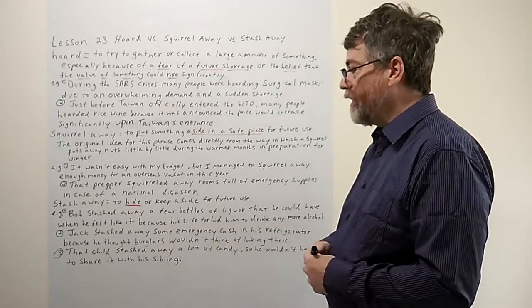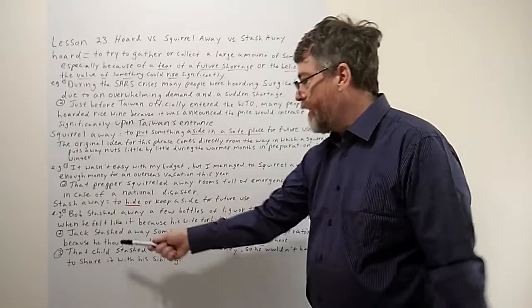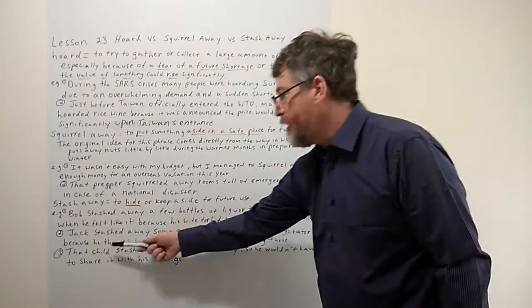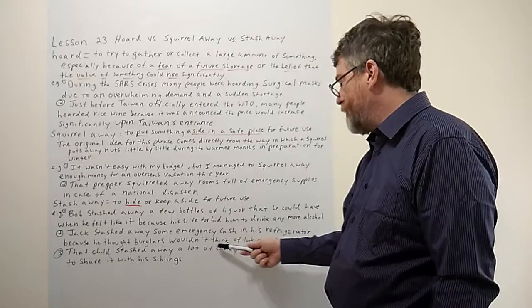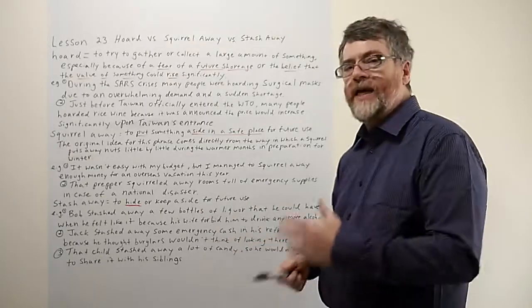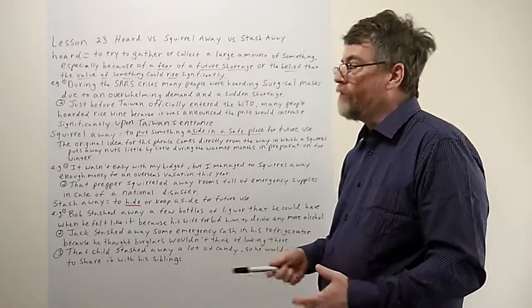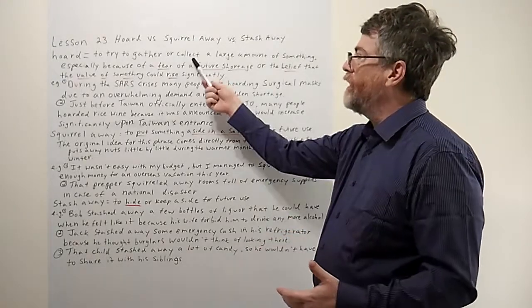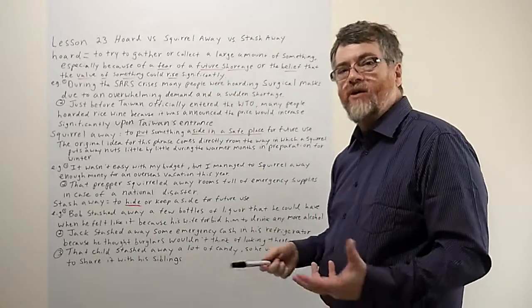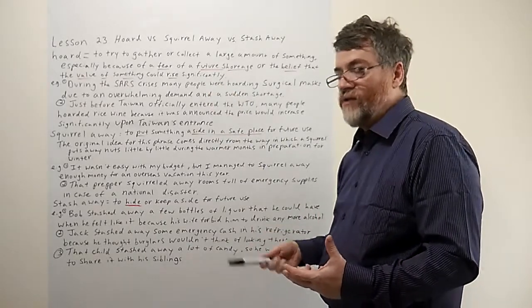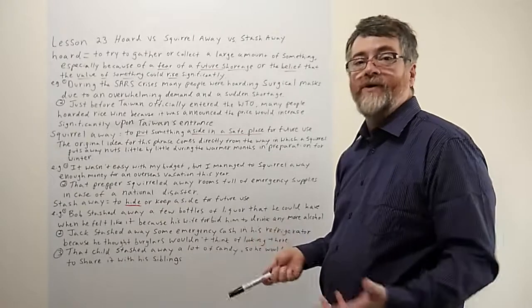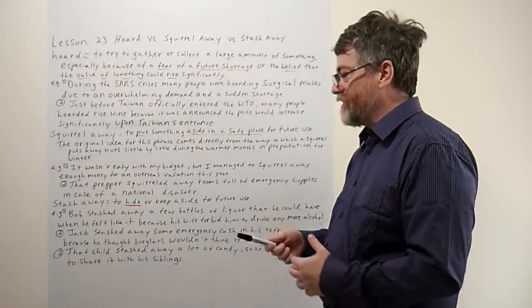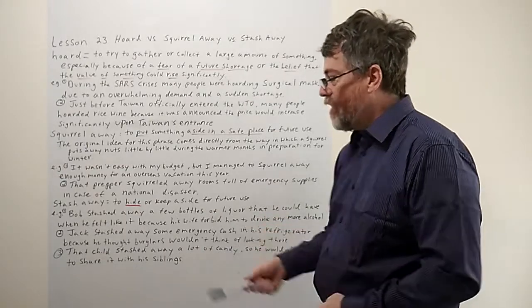Okay, let's look at the second example. Jack stashed away some emergency cash in his refrigerator because he thought burglars wouldn't think of looking there. All right, again it's the idea of hiding it, not having it out in the open where, like with some of the other ones like hoard, you may not hide it like in your house. Like if you had the rice wine for example, probably your family all knows exactly where it is. So there is a difference. There is a difference about hiding.